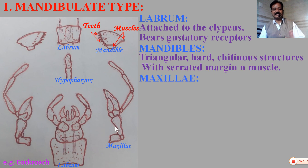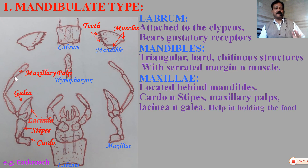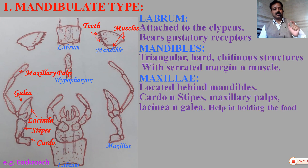Maxilla consists of two main basal plates called cardo and stipe. Cardo is attached to the head plate, and stipe is attached over the cardo. Stipe bears a five-segmented structure called the maxillary palp, along with forcep-like structures called lacinia and galea, which pick up the food material during feeding. So the maxilla holds the food material during feeding.